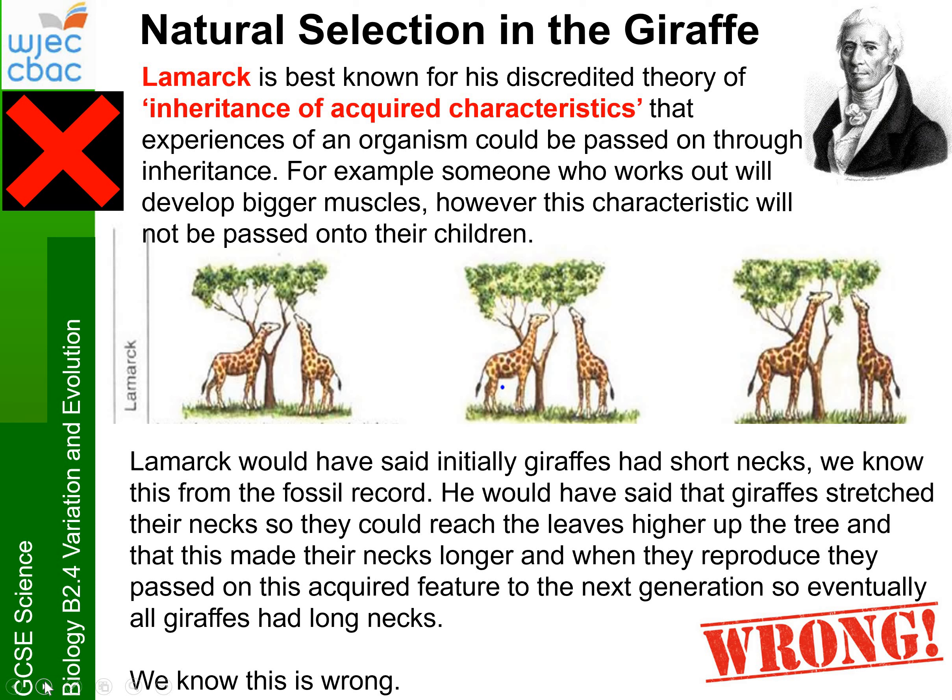So Lamarck's theory of inheritance of acquired characteristics basically suggested that if an organism experienced something, it could be passed on through inheritance to the offspring. For example, someone who works out will develop bigger muscles; however, this characteristic will not normally be passed on to your children. If we apply this to giraffes — we know that originally there were giraffes with both short necks and long necks, meaning there was variation amongst the giraffe population. How do we know this? From the fossil record.